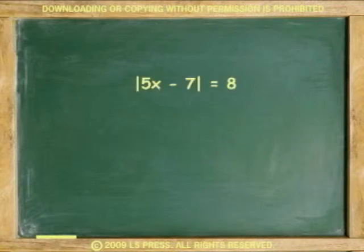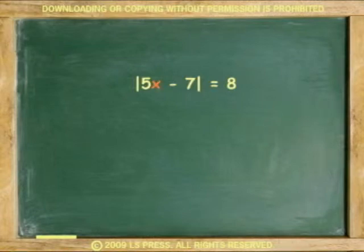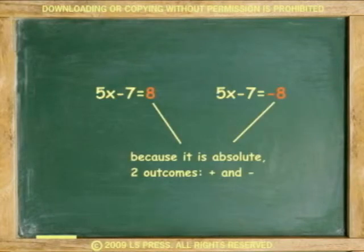Let's try now equations with absolute values. The thing to remember here is that the answer to an absolute expression is never negative. Furthermore, it also means that it cannot start as a negative expression. Therefore, we must realize that each unknown absolute value has the possibility of coming from either a positive or a negative value, producing then two solutions. For example, in absolute x equals 8, the value for x could be 8 or negative 8.